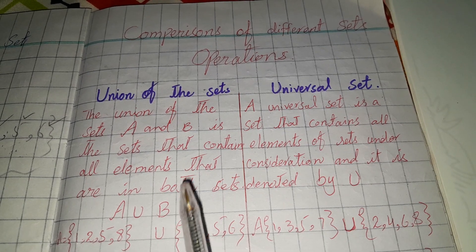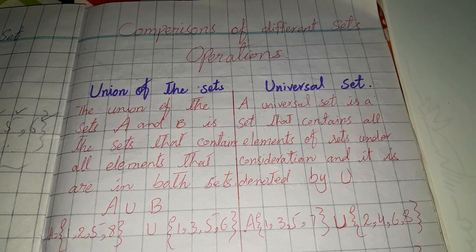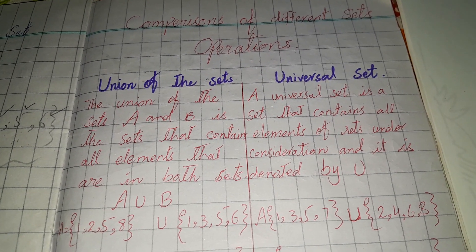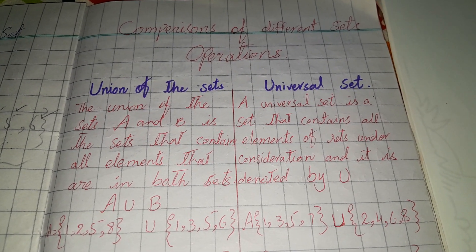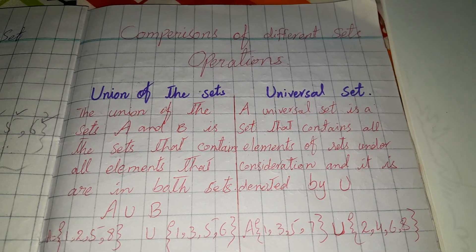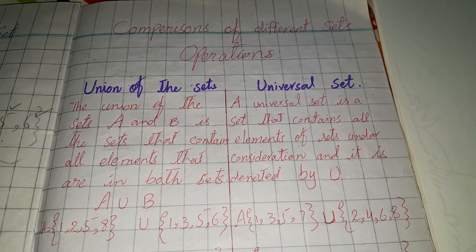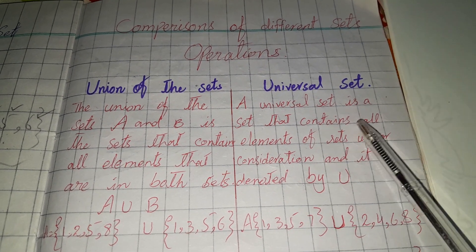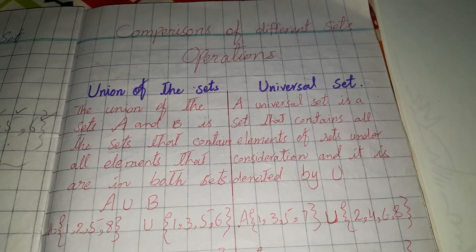Different operations have similarities, and we can learn what is different and what is the same. That way, learning is better and more permanent. Today we are going to compare two sets: the union of sets and the universal set. The universal set is like a union set — just the name and symbol change while the rest remains the same.